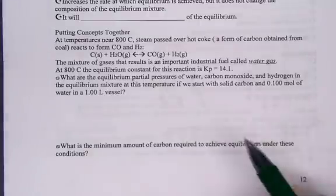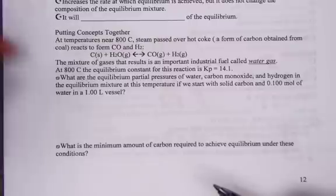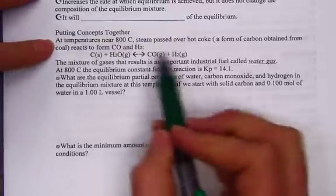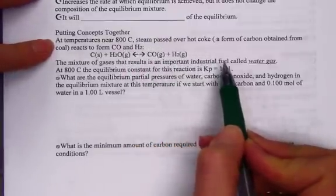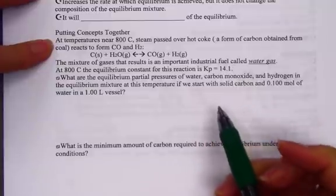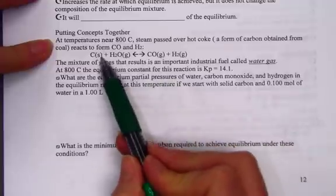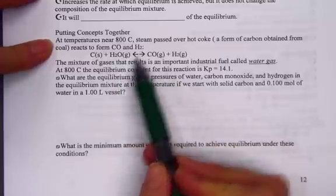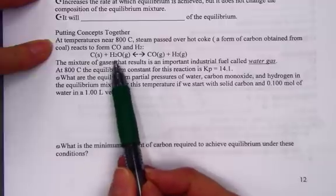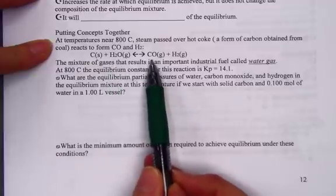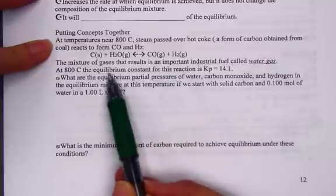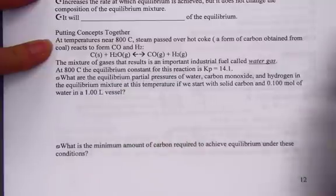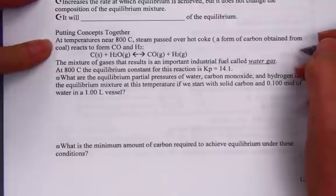Putting concepts together, our last problem in the NOPEC. At temperatures near 800 Celsius, steam passes over hot coke, a form of carbon obtained from coal. Reacts to form CO and H2. The equation provided is solid carbon with gaseous water producing carbon monoxide gas and hydrogen gas.